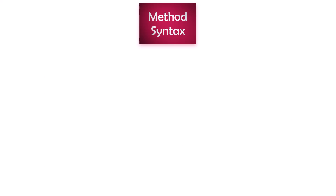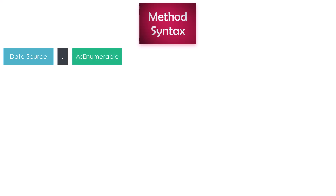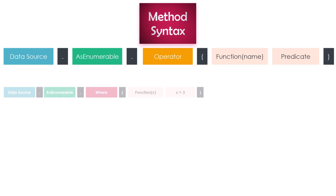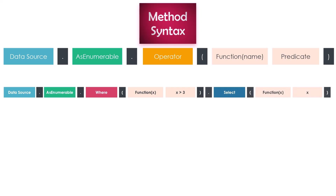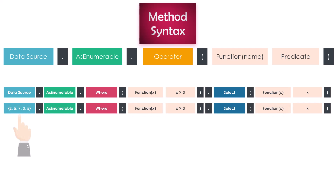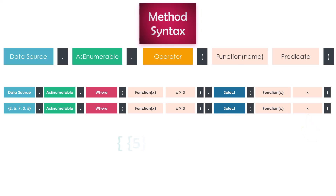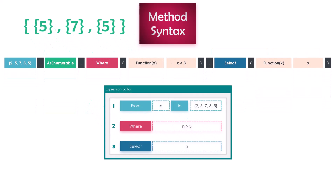The structure of a method syntax query starts with defining the data source, then using the AsEnumerable function to convert the data source to an enumerable type so LINQ operators can be used. After that, operators are chained: for example, where to filter the data, then select to get the elements from the data source. So we have initialization first, then condition, then selection. Using this query on the same array with numbers greater than three gives the same output as the query syntax example.